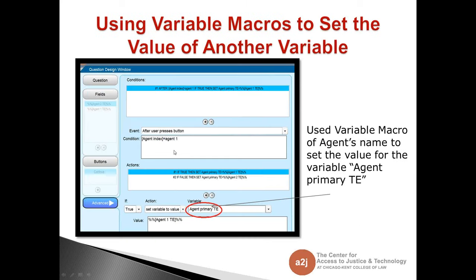The second way to use a Variable Macro is to set the value of another variable. I used the Variable Macro of the agent's name to set the value of this new variable, AgentPrimaryTE. So in this question, now we're on the Advanced tab. The question itself was: which person have you selected to be your primary agent? I gave them the option of Agent 2's name and Agent 1's name. I go to the Advanced tab and create a condition: if they select Agent 1, I want A to J Author to set the value of this new variable, AgentPrimaryTE, to Agent 1's name.